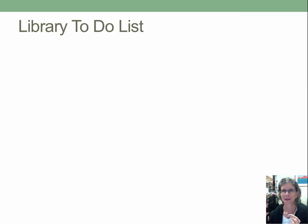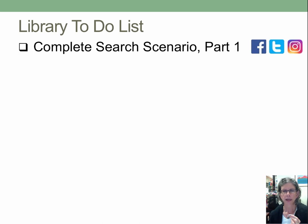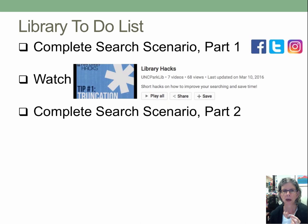Here's the to-do list. First, there's a search scenario where you need to find specific articles for a class — your client is the communications coordinator for the town of Carrboro, North Carolina, who is trying to develop a social media strategy for the town during a natural disaster. I'd also like you to watch five short videos called library hacks to help you with searching in our database called EBSCO. Then there's a second scenario where you search on your own to find more articles for your client.